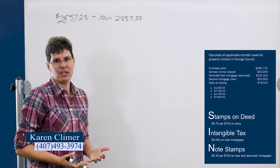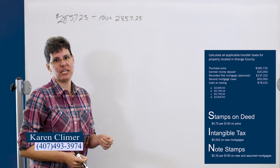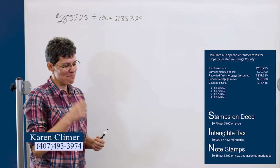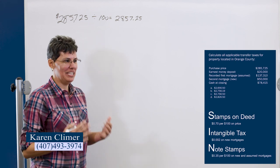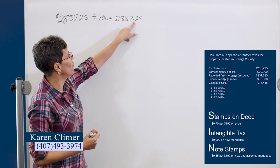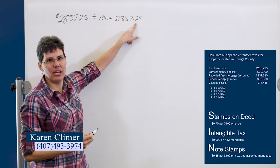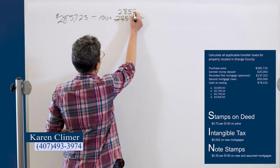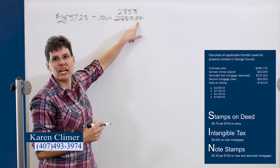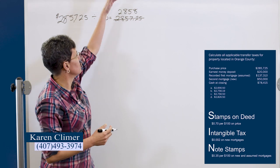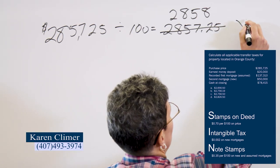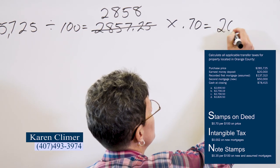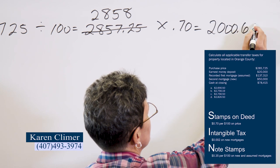These are stamps. They're literally stamps. You lick them, you stick them. I'm kind of dating myself. We don't lick stamps anymore. Now you peel them off a piece of paper and stick them, but they are literally stamps. So you can't buy 0.25 of a stamp. You have to round up to 2858. So if this is any decimal at all, you have to round up to the next number. And the stamps cost 70 cents each. So that's going to give us $2,000.60.